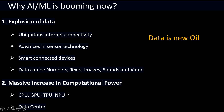On the other hand, the massive growth in computational power comes from advancements in hardware technologies — CPUs, GPUs, TPUs, and NPUs — as well as the rapid expansion of data centers worldwide. Together, these have given AI the exponential growth we are witnessing today.